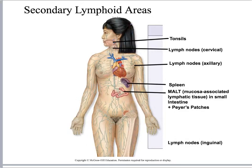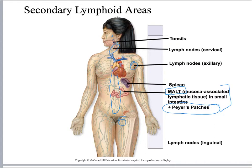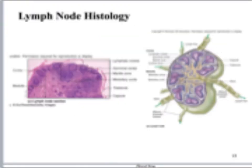This slide shows where you've got the different tonsils, and lymph nodes in your neck, axilla, inguinal region, and all along the abdominal aorta — these are major regions because of the potential for introducing pathogens there. Embedded within the intestines you have MALT — mucosa-associated lymphatic tissue. The most important MALT to remember are the Peyer's patches, which we'll also look at again with the digestive system.